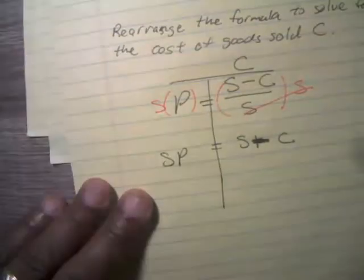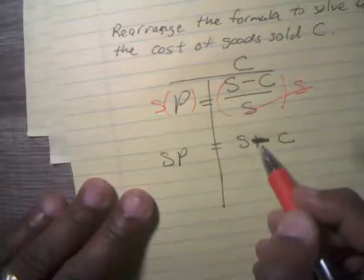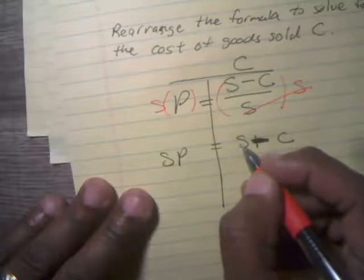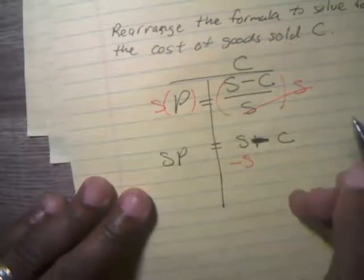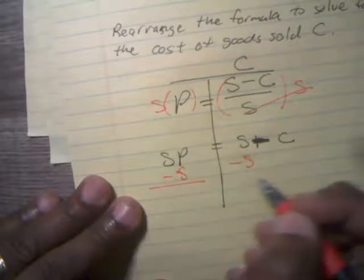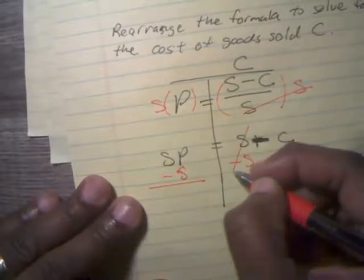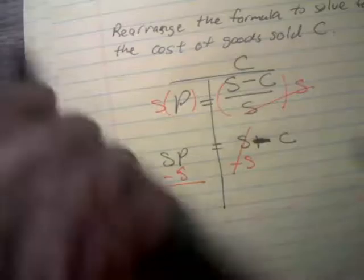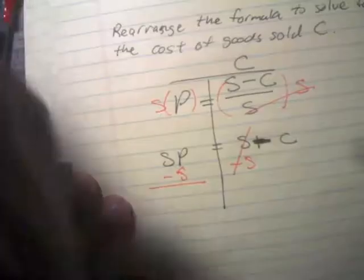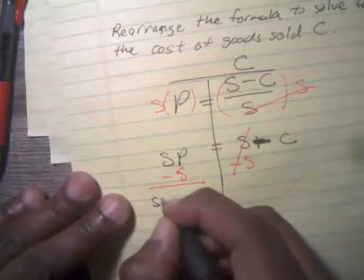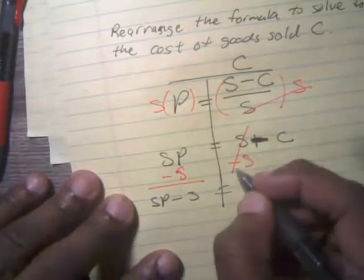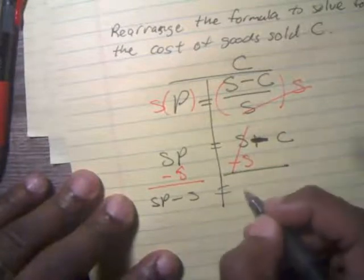Keep in mind I'm trying to get C by itself. Now notice that I'm not subtracting the S, so I need to subtract S on both sides. We have a zero pair there; nothing cancels here, so I'm just going to end up with SP minus S.